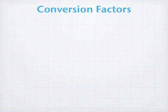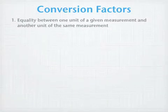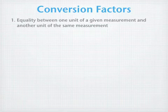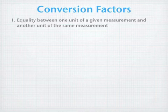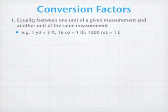So what are conversion factors? There are two different ways of looking at conversion factors. First, a conversion factor can be thought of as an equality between one unit of a given measurement and another unit of the same measurement, or the same type of measurement. So for example, we saw on the previous slide that we had one yard equal to three feet. We also may realize, may remember that 16 ounces is the same as one pound, and that 1,000 milliliters is equal to one liter.